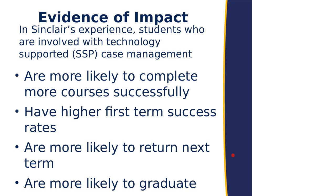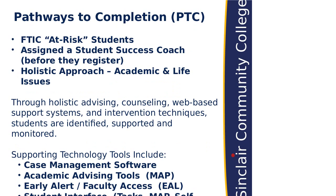The group I'll share data about is called Pathways to Completion — first-time-in-college, at-risk students, typically not academically prepared, in multiple developmental education courses or in poverty. We identify them at admission and assign them to a student success coach. Before they register the first time, they begin this process of mentoring, coaching, and advising. We track all of that within Student Success Plan and use those tools to gather additional information through the student intake, create their academic plan, and ensure that faculty let us know if these students stumble.